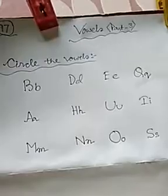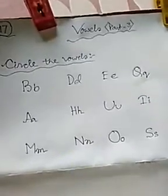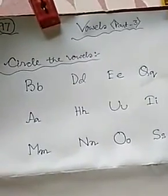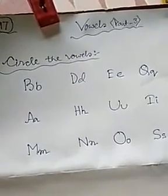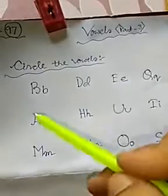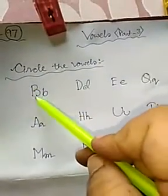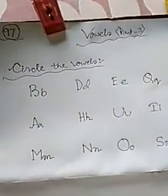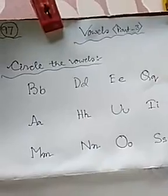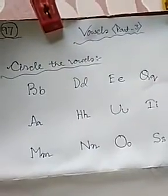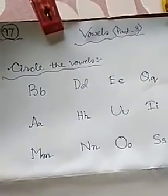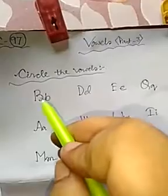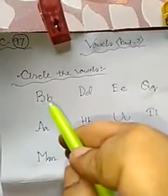Here you can see there are some letters in capital letters as well as small letters — capital B, small b, capital D, small d, like this. So you have to just circle the vowels.